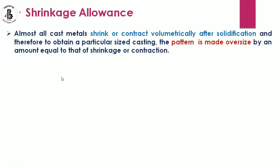Starting with shrinkage allowances — almost all cast metals shrink or contract volumetrically after solidification. In the casting process, molten metal is poured into the mold cavity, and after solidification it becomes the cast product. During solidification, every material shrinks. To obtain a particular-sized casting, the pattern is made oversize — the pattern is always larger than the cast product.